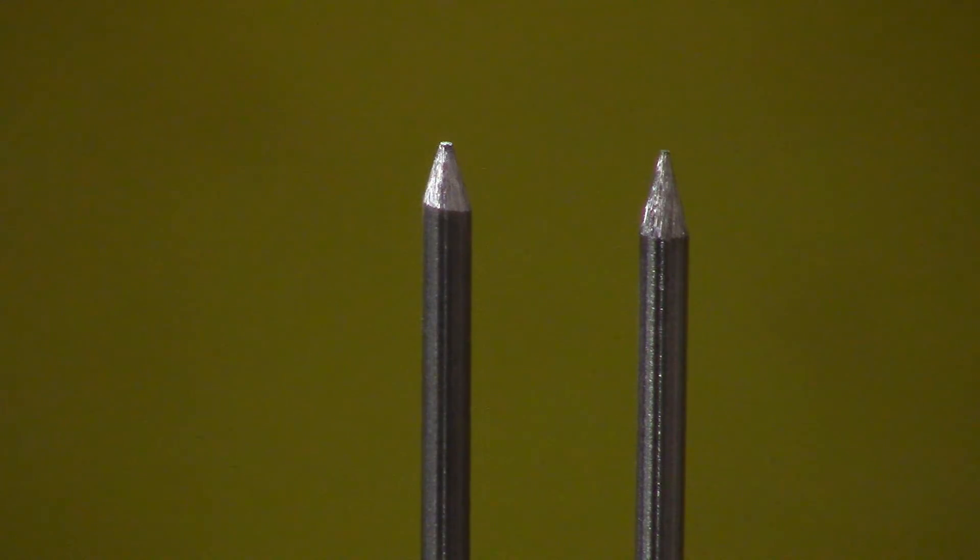All right, this is the final product. They're both properly ground tungstens and you can see the one on the right is the one we used the drill on and it's a little bit more uniform. So I kind of like that little trick.